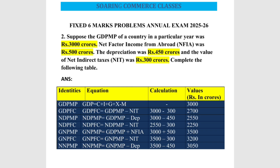They will also give the identities in the examination. The identities will be GDP MP, GDP FC, NDP MP, NDP FC, GNP MP, GNP FC, and NNP MP. Alongside the given values — GDP MP, net factor income from abroad, NIT, and depreciation — you need to know the formulas and calculate the values.